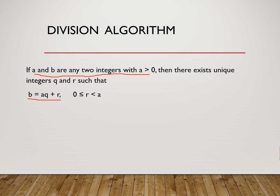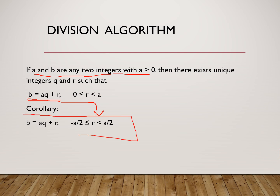Further we have its corollary. This result can be modified: if we take remainder lying between negative A by 2 and A by 2, this result also can be used to solve various examples. In this video we have read the statement of the algorithm, and now we will solve different examples using these two statements.